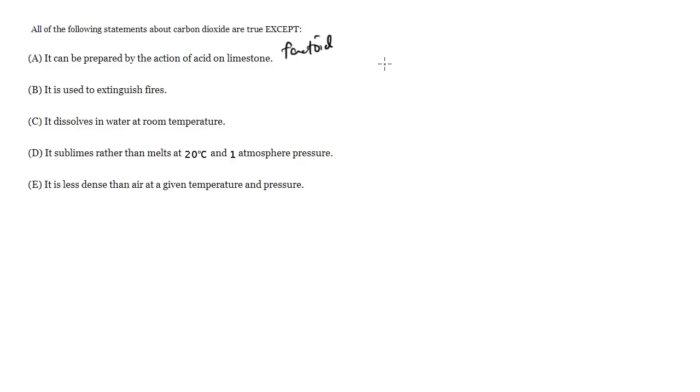So for instance, this would be the equation for this one. Calcium carbonate plus two hydrochloric acids going to the salt plus carbon dioxide plus water. So this is the equation that describes A, so this is true, you can get rid of it.